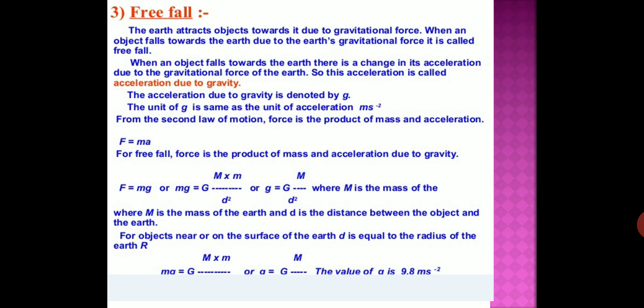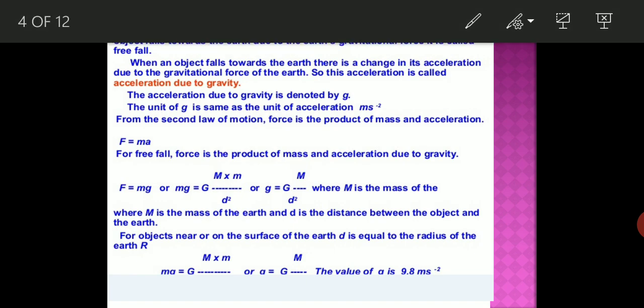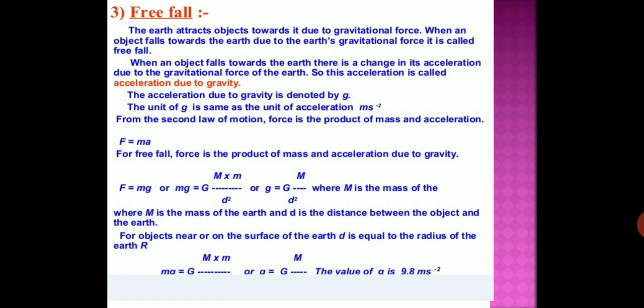While falling, there is no change in the direction of motion of the object, but due to the earth's attraction there is a change in the magnitude of the velocity. Any change in velocity involves acceleration. Whenever an object falls towards the earth, an acceleration is involved. This acceleration is due to the earth's gravitational force, and it is called the acceleration due to gravity.